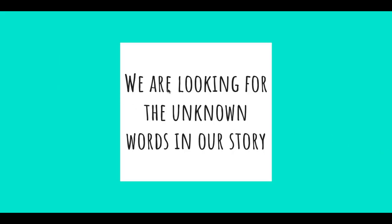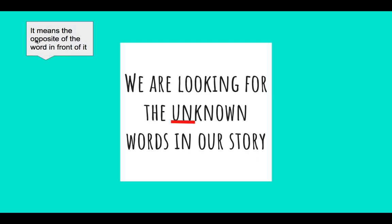We are looking for the unknown words in our story. Who can help me out? What do you think that 'un' part in 'unknown' means? It means the opposite of the word in front of it. So it's not something you know — it's something unknown, you don't know it. Another example is 'unsafe' — something that's not safe. 'Unfair' — something that's not fair. 'Unreal' — something that's not real. So we are looking for the words in our story that we don't know.